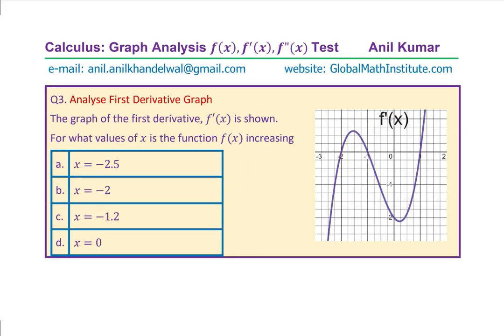The last question: the graph of the first derivative is given — for what values of x is f(x) increasing? For f(x) to be increasing, f'(x) must be greater than 0. The function is increasing within the interval where the graph of f'(x) is positive. Checking the given points: at x = −2.5, f'(x) is negative, so not increasing. At x = −2, f'(x) = 0, so not increasing. At x = −1.2, f'(x) is positive, so f(x) is increasing there. At x = 0, f'(x) is negative. Therefore option C, x = −1.2, is the correct answer.